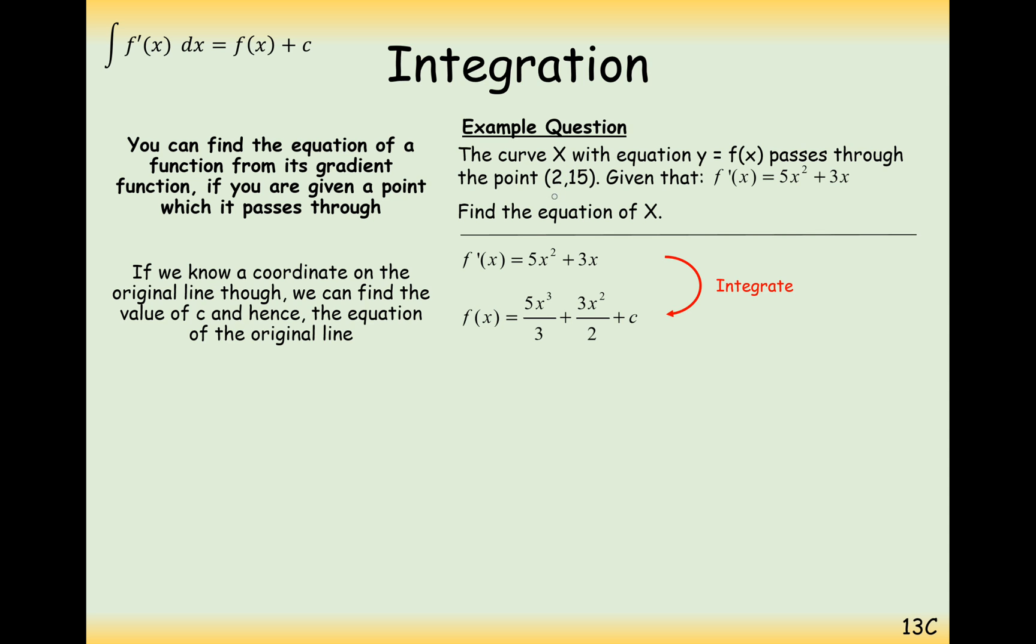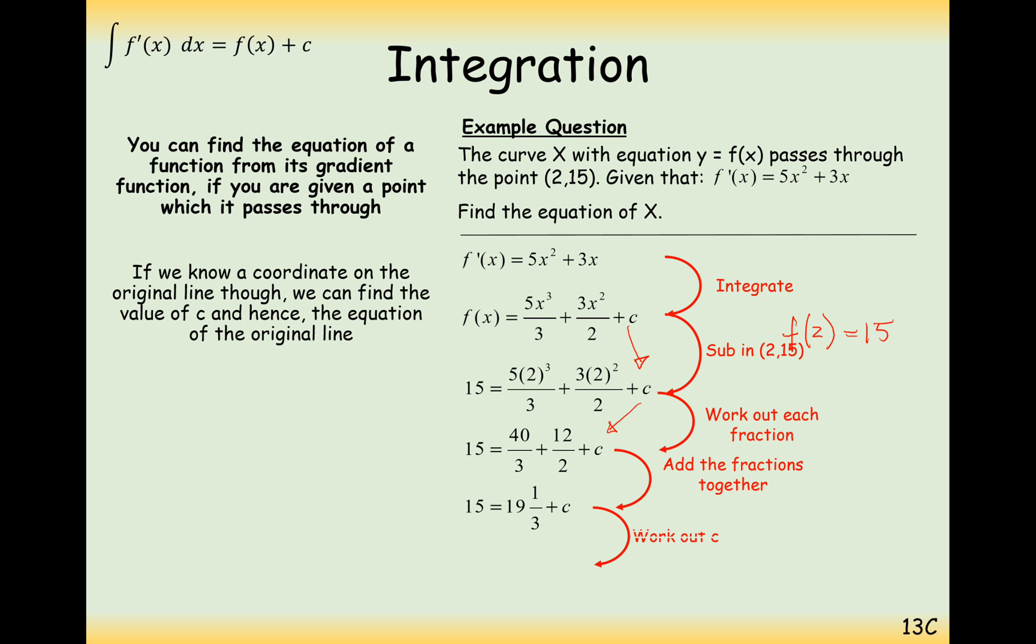Now what we know is for the original function that when we plugged in the number 2 into our f function we got the answer of 15 out again. So we can substitute in the values of 2 and 15. 2 goes in the x position and 15 goes in the y coordinate or the function of x position. And now we work out the c, this plus c is just lingering on at the end and we need to work out what that value is. So c here is eventually going to end up as minus 4 and a third.